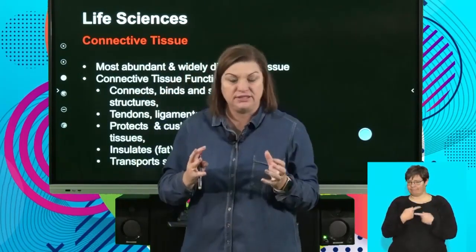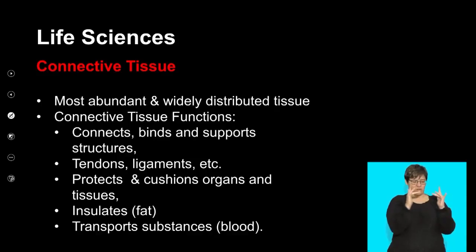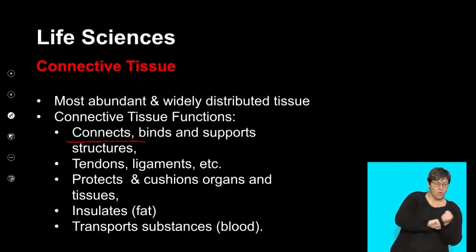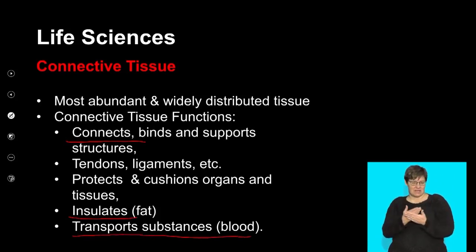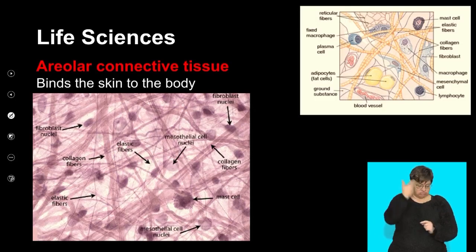Connective tissue is totally different — it has a totally different structure. What does connective tissue do? It connects. It connects one structure with another, it can bind or support something, it might act as an insulator, and it can transport. Connective tissue is the most abundant tissue — it's the tissue that's pretty much found everywhere.